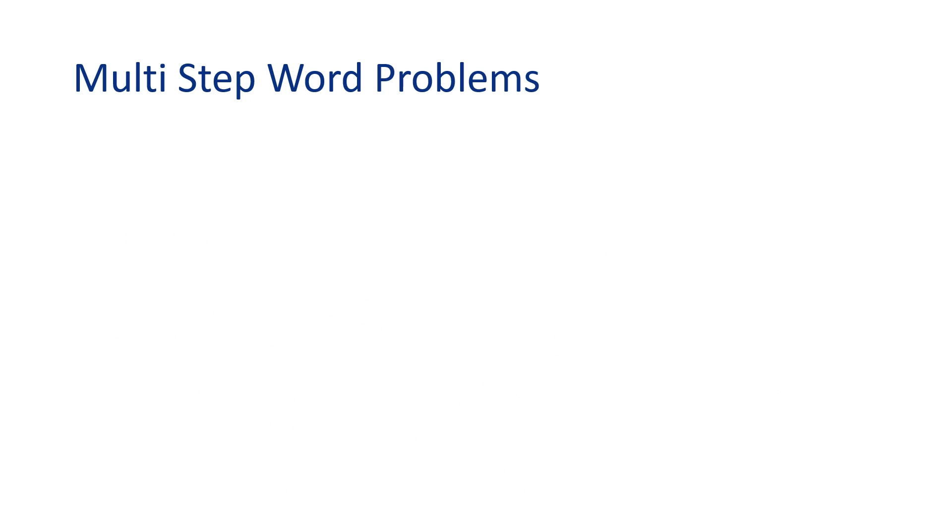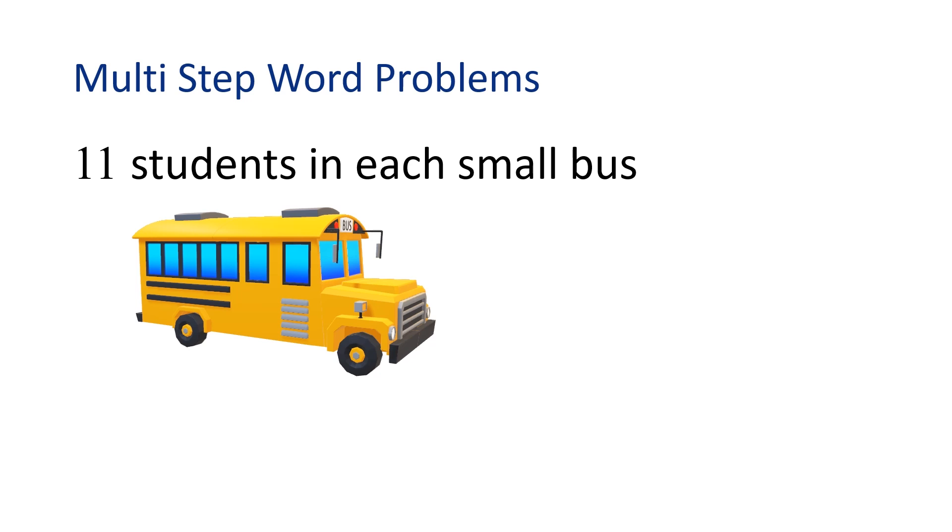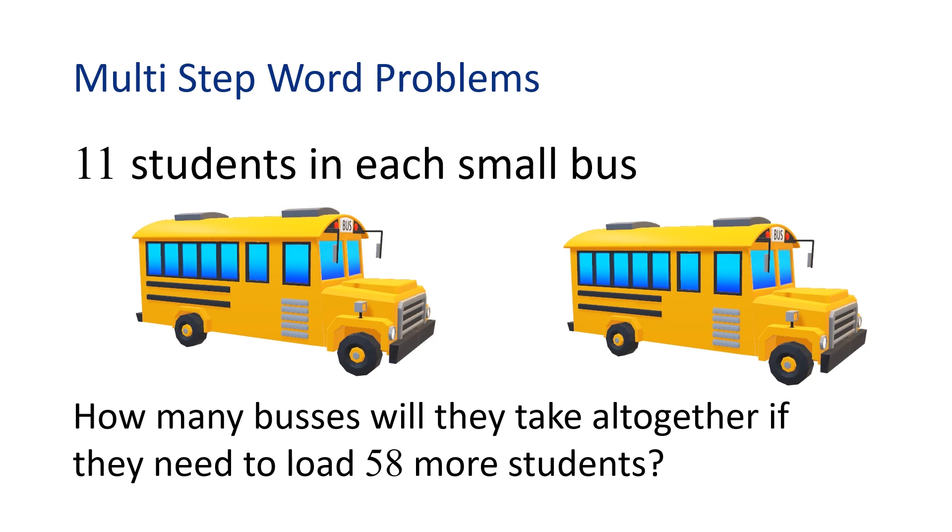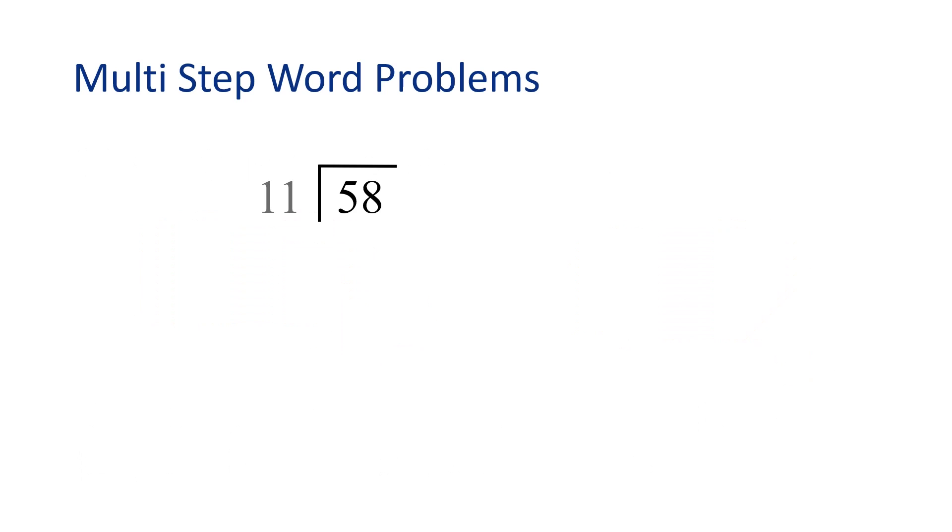Let's look at another problem. The 5th grade is taking a field trip to a local museum. They can fit 11 students in each small bus, and 2 buses have already been loaded. How many buses will they take altogether if they need to load 58 more students? We can use division to find how many small buses can hold 58 students. If each bus holds 11 students, we can divide 58 by 11 to find the number of buses. Let's set up our division problem. 58 is the dividend and it goes under the long division sign. And 11 is our divisor and goes out in front of the sign. How many times does 11 go into 58 without going over? That's right, 5 times.